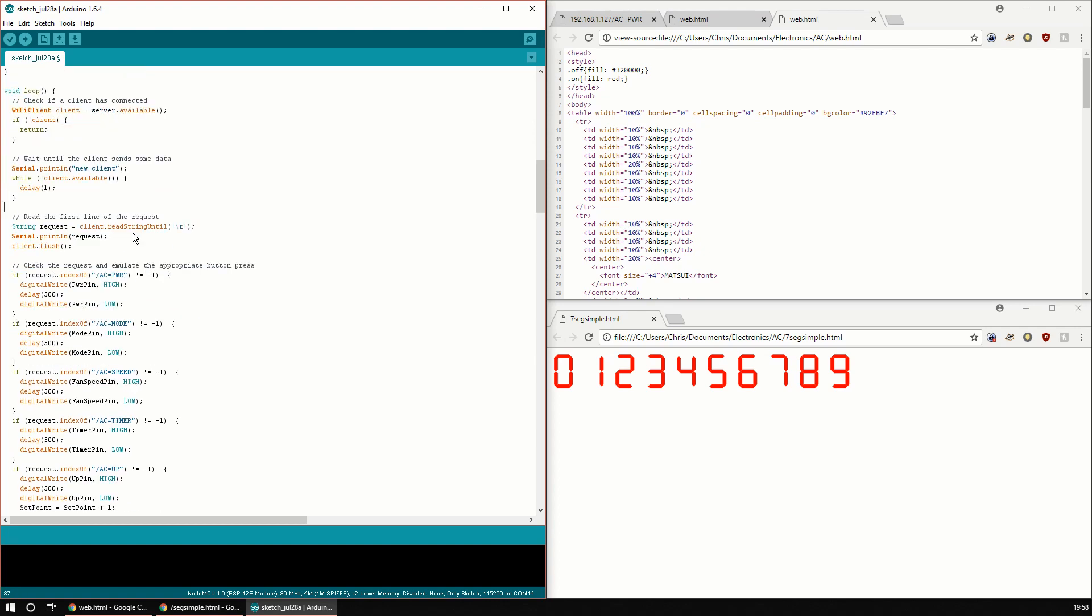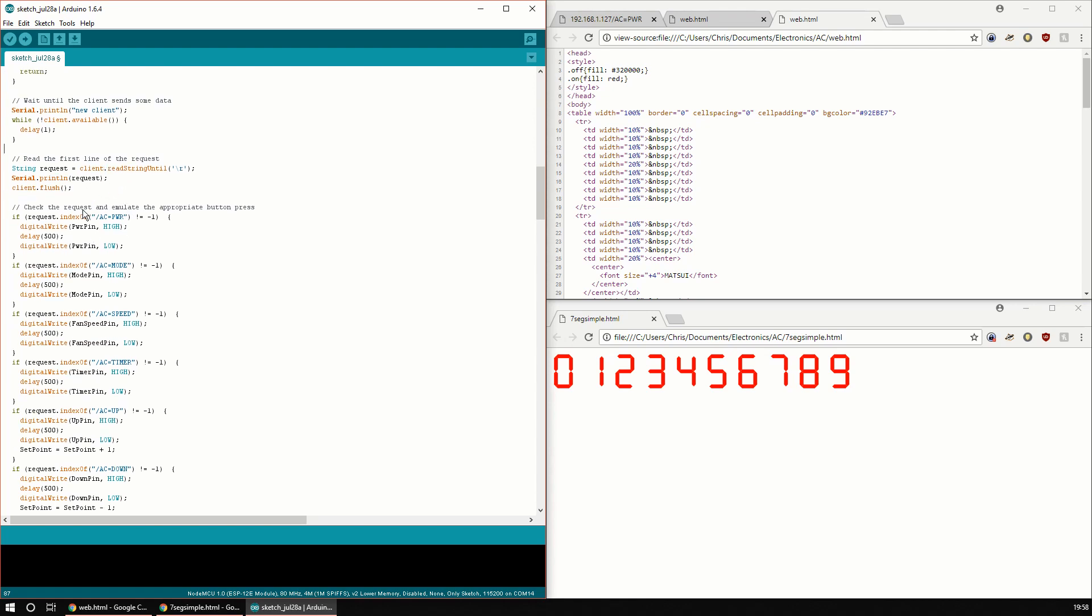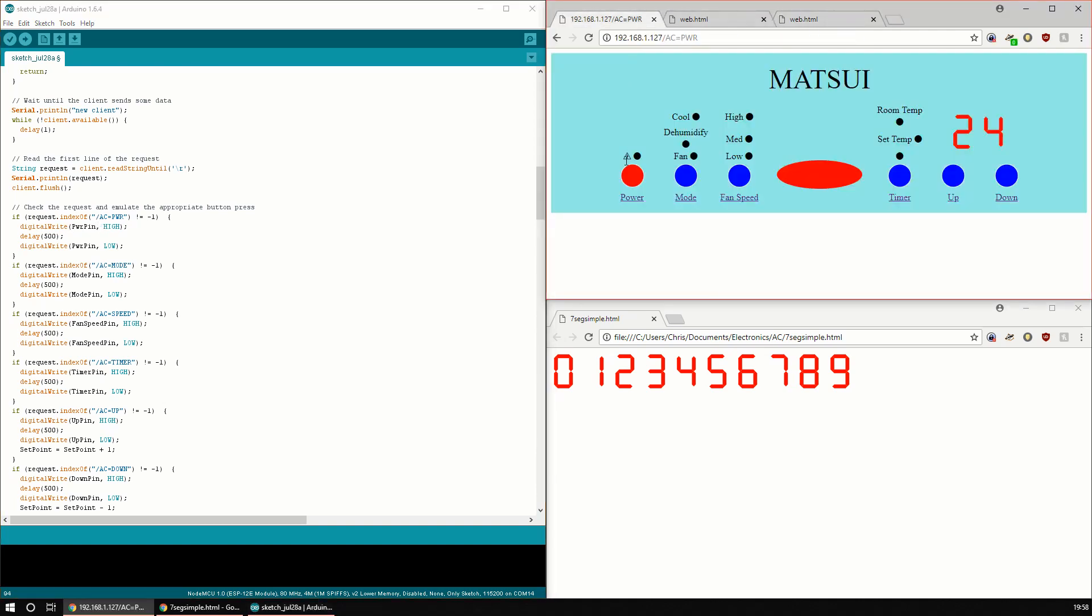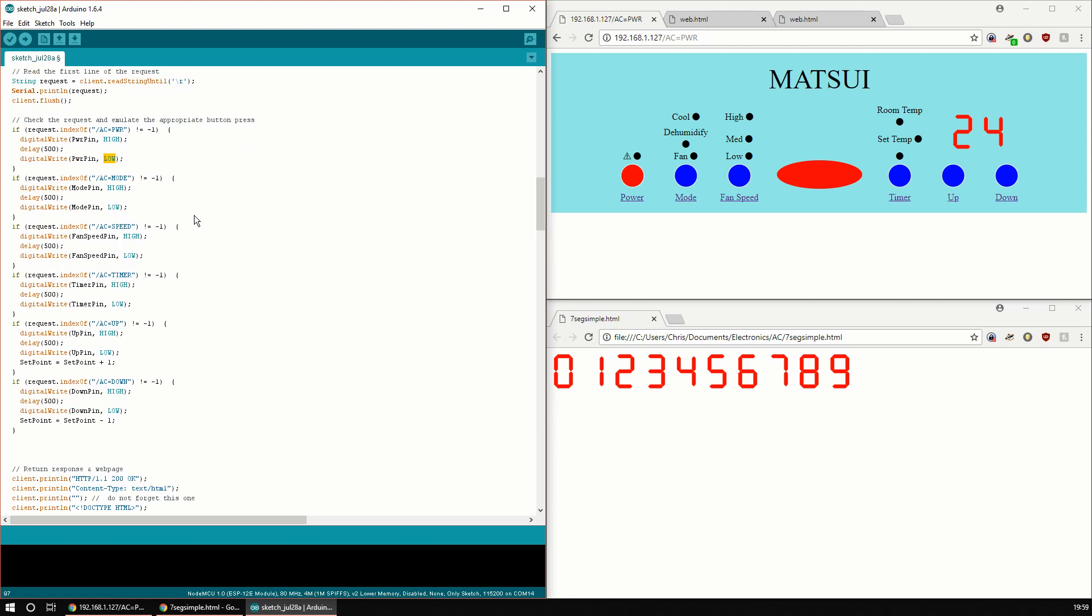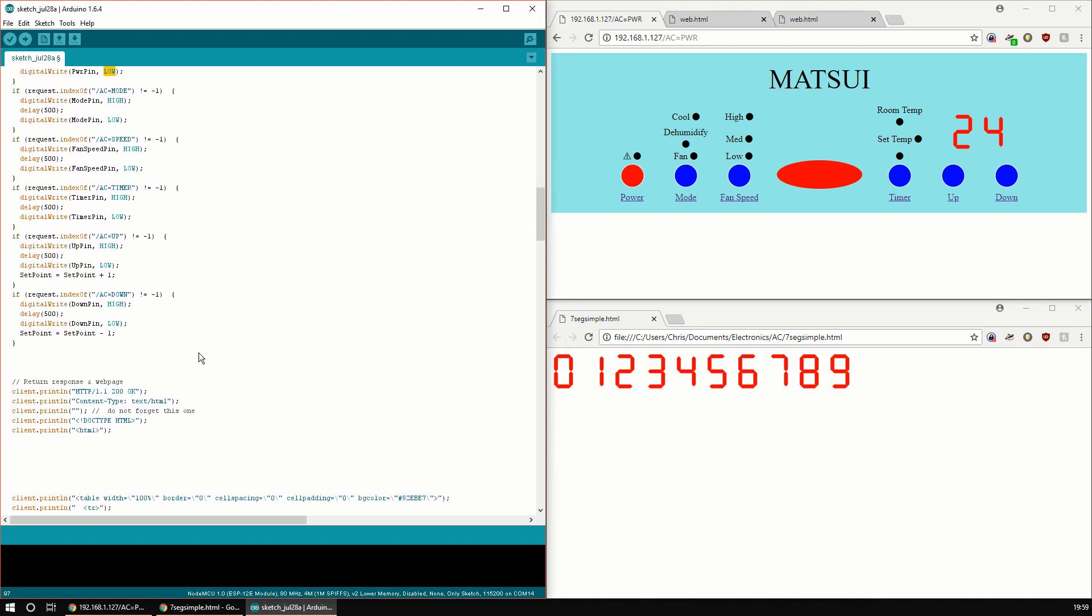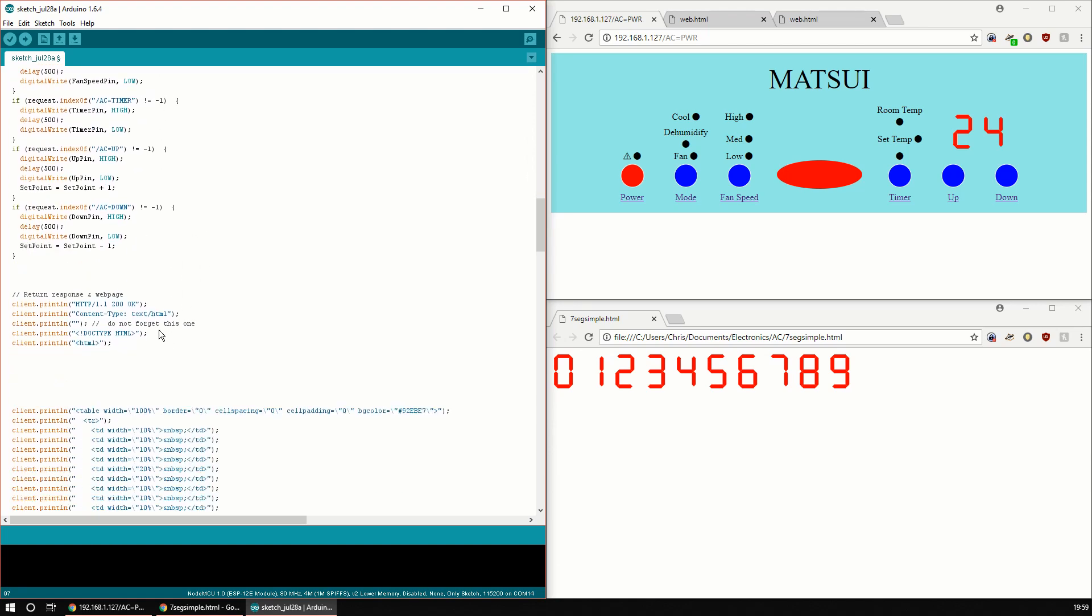It sits there in this loop and waits for a Wi-Fi client to connect. When it does get a client connect, it reads in the request and basically sees what's in the path of the request. The API, if you'd even call it that, for this is really straightforward. If you look at some of the links down here, there's just AC equals power, mode, speed, timer, up, down. It's just an if statement for each of these. It will just write the appropriate pin high for 500 milliseconds and then write it low again. Once it's done the pin operation, it will then respond with the web page.